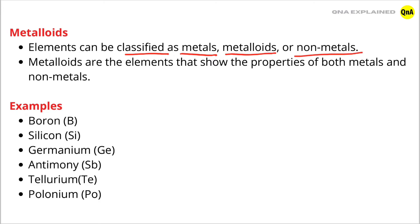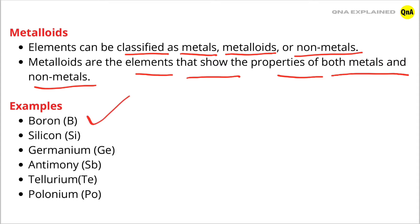Metalloids are the elements that show the property of both metals and nonmetals. Examples: Boron, Silicon, Germanium, Antimony, Tellurium, Polonium.